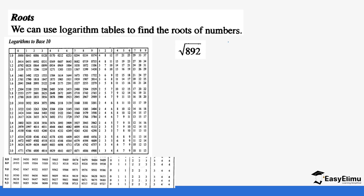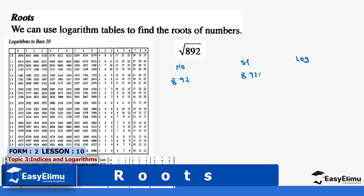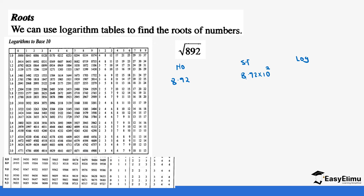We will start with the number 8.92. We are going to write the number in standard form and log. The number is 8.92 and the standard form is 8.92 times 10 power 2. So we are checking 8.92 in our logarithm table. This gives us 0.9504, and since we have 10 power 2, it's plus 2, so it becomes 2.9504.